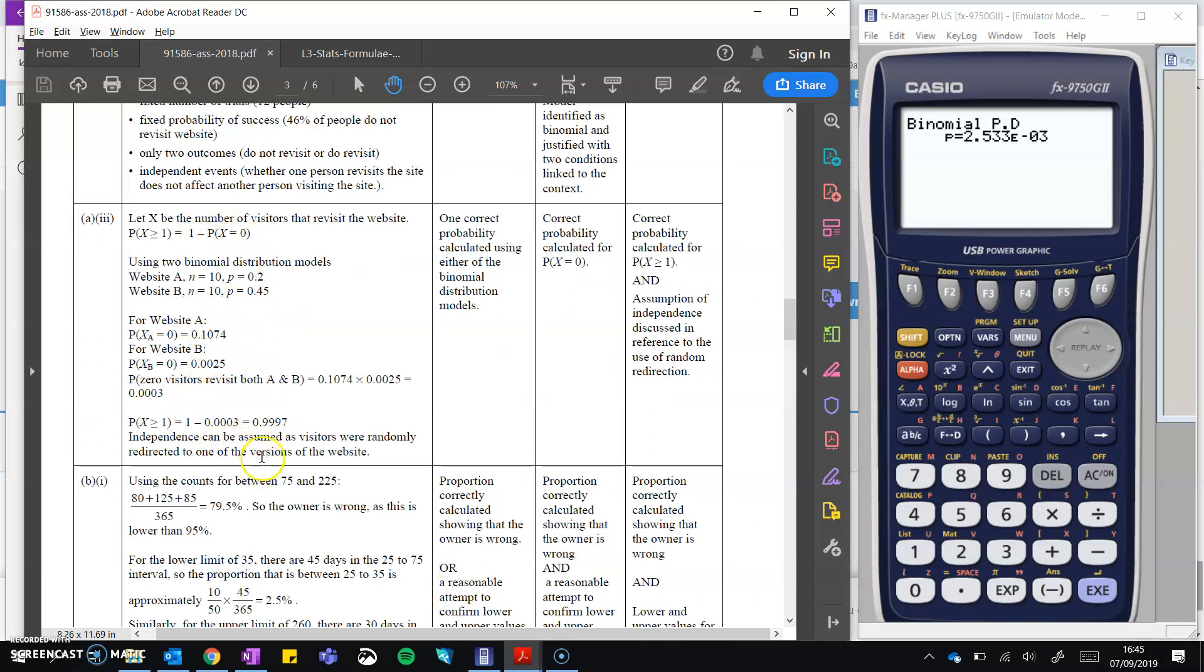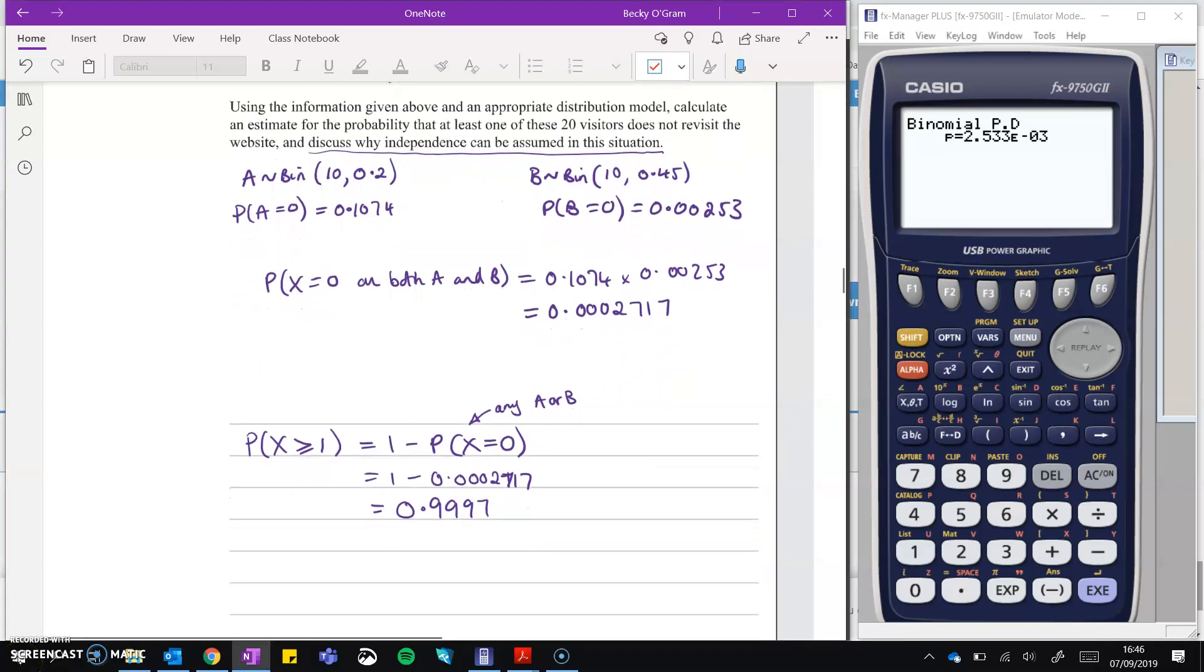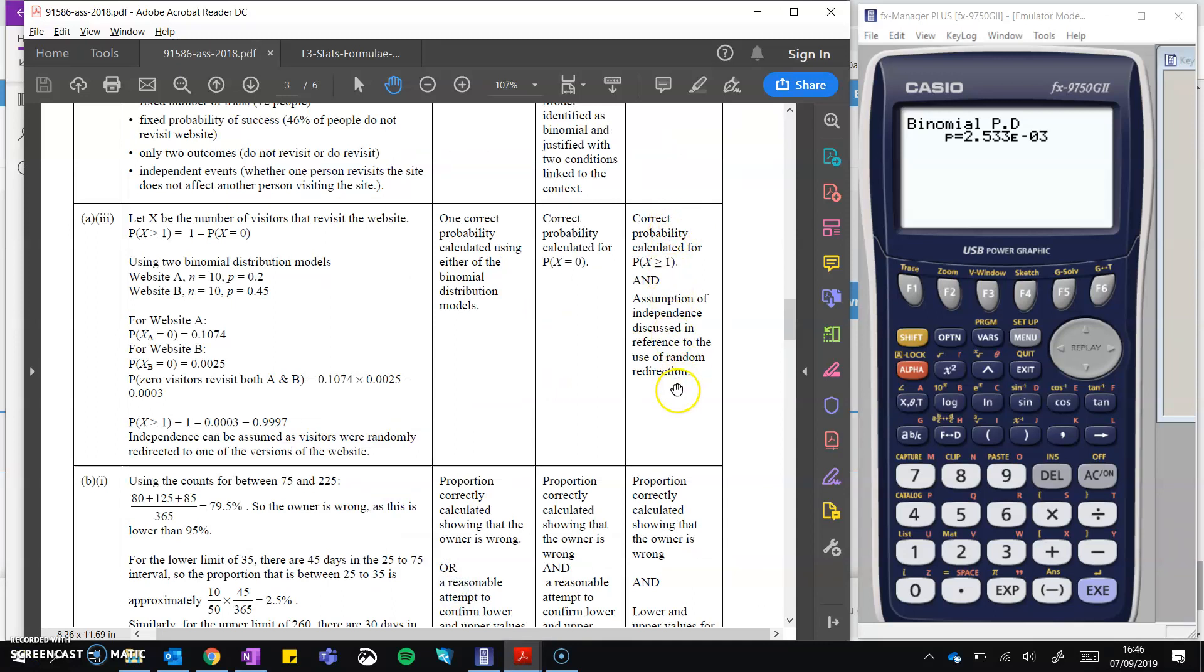We'll go look at the answers here. You've got them working through the same things that I've just shown you. Then we've got one of those probabilities correct gets you a U. Correct probabilities for X equals zero, so the total being zero, by multiplying A and B together. Correct probability calculated for greater than or equal to 1 by subtracting that from 1. Oh, and I forgot the last bit of that question. So let's just go back and do that. Here's a lesson in making sure you have answered the question. This last bit here, discuss why independence can be assumed in this situation. So A and B should be independent of each other because they were randomly assigned at the beginning which version they got sent to. And here we've got that's what's needed for the excellence. Something about assuming the independence in reference to the context of the question.